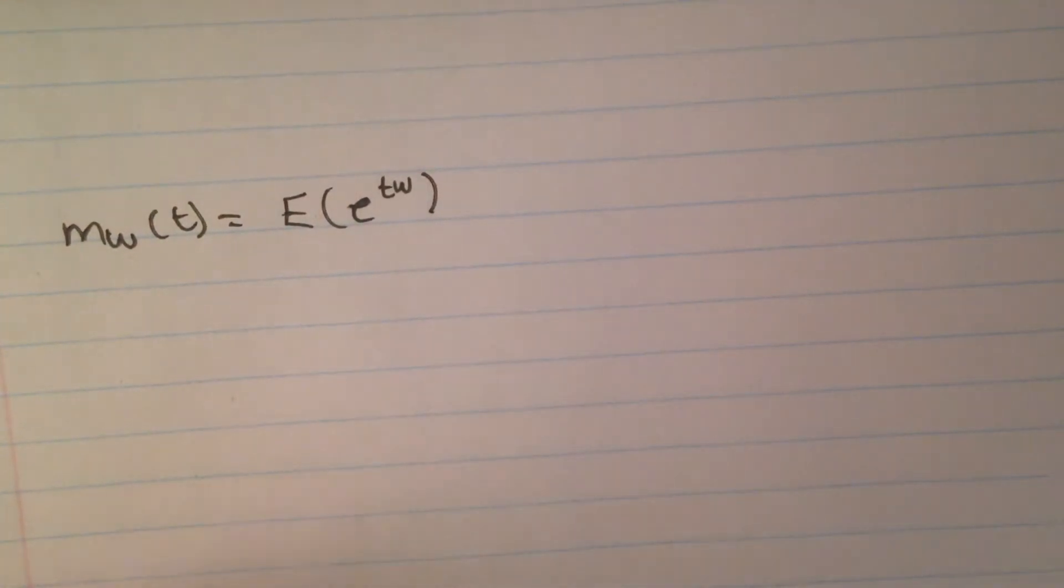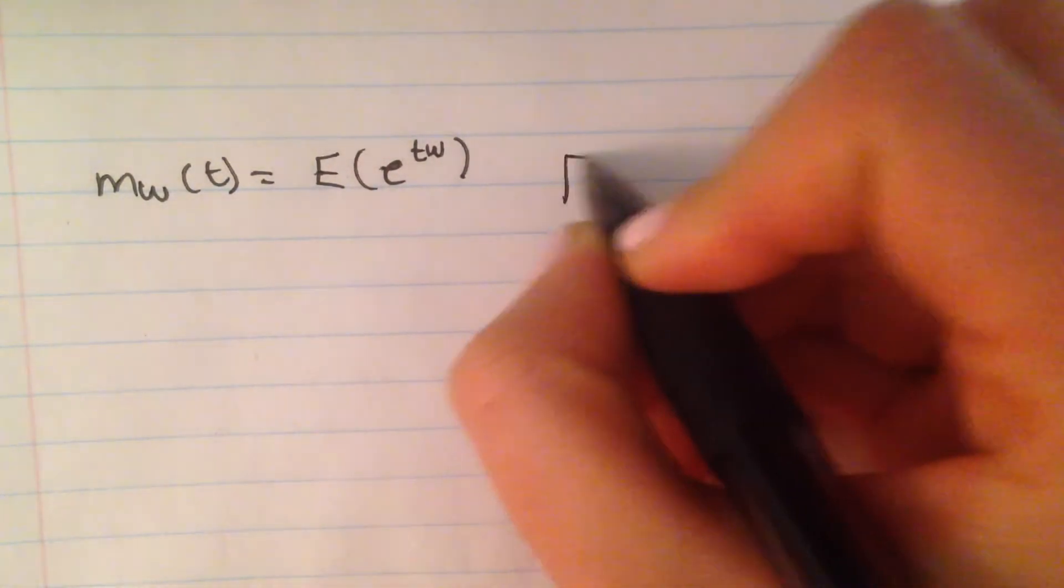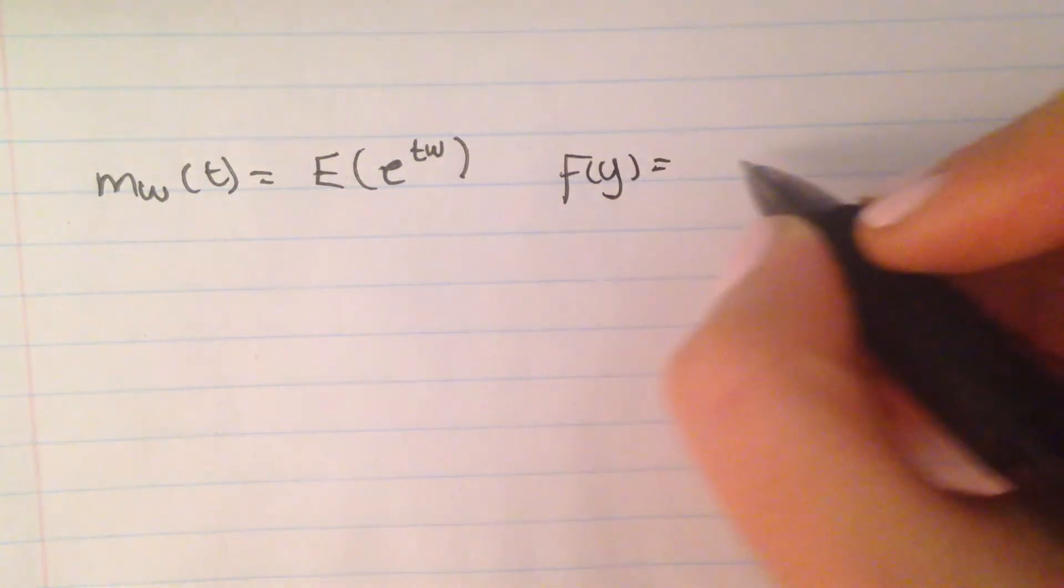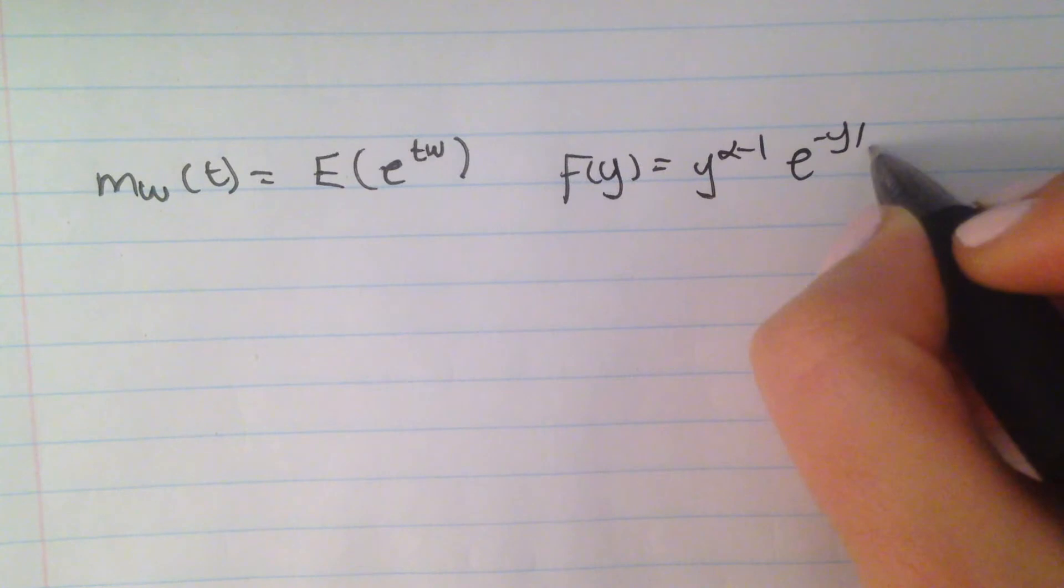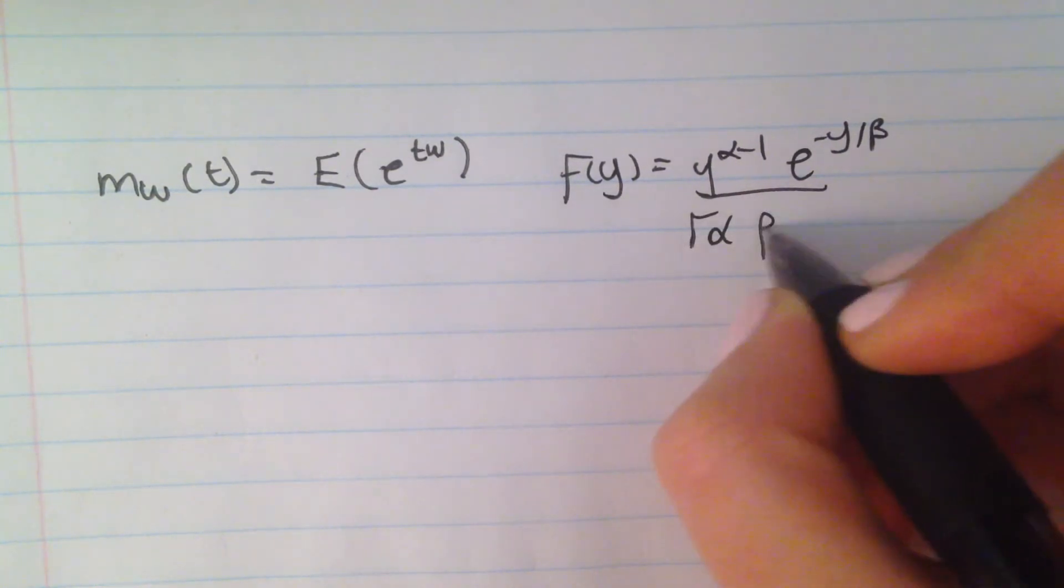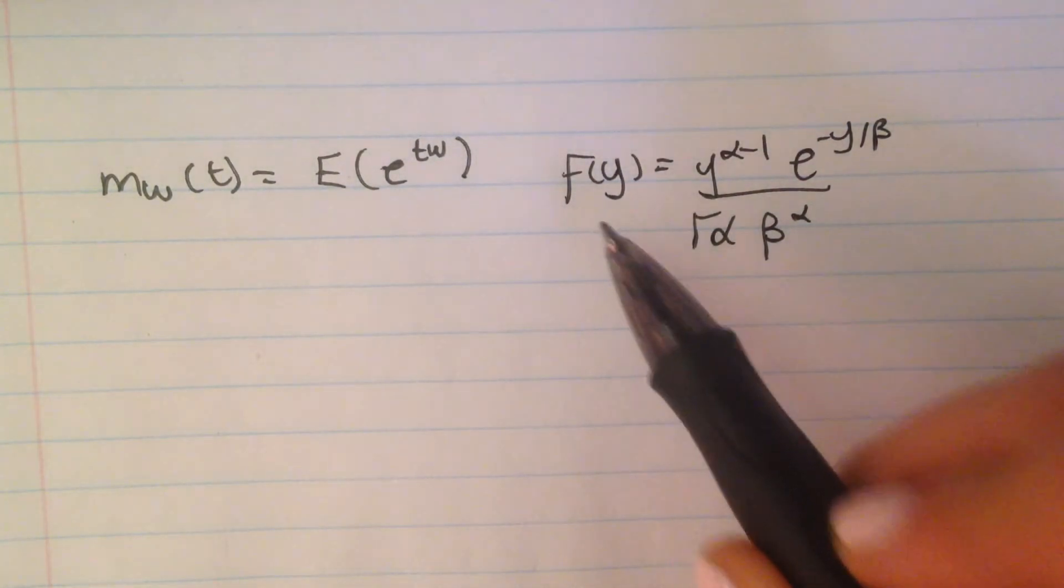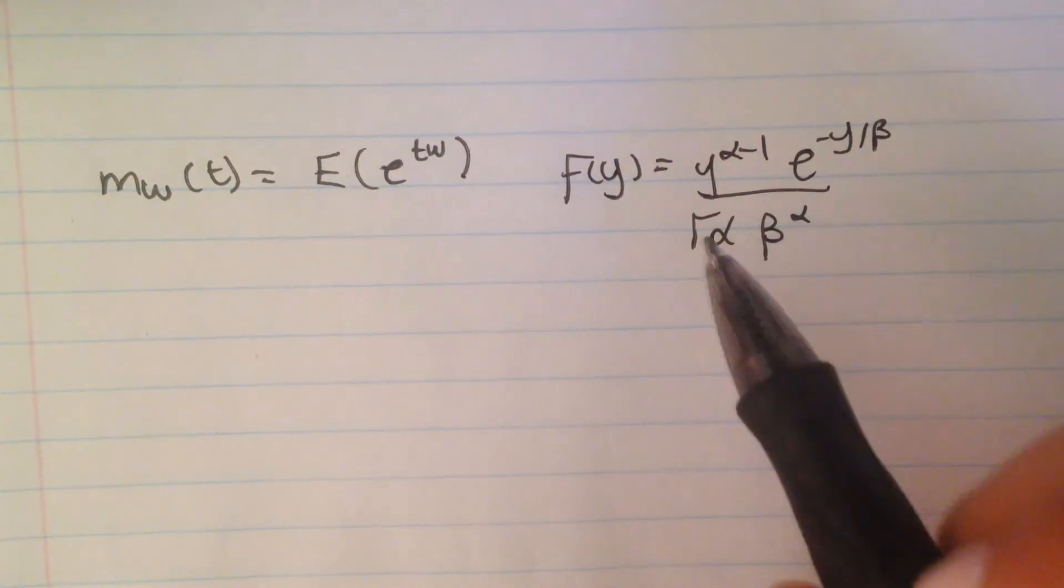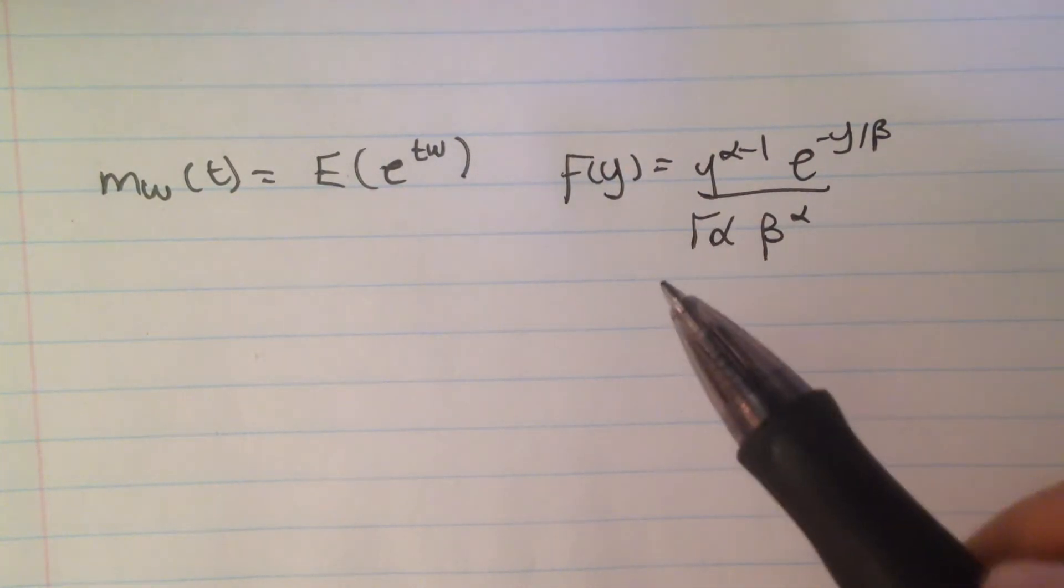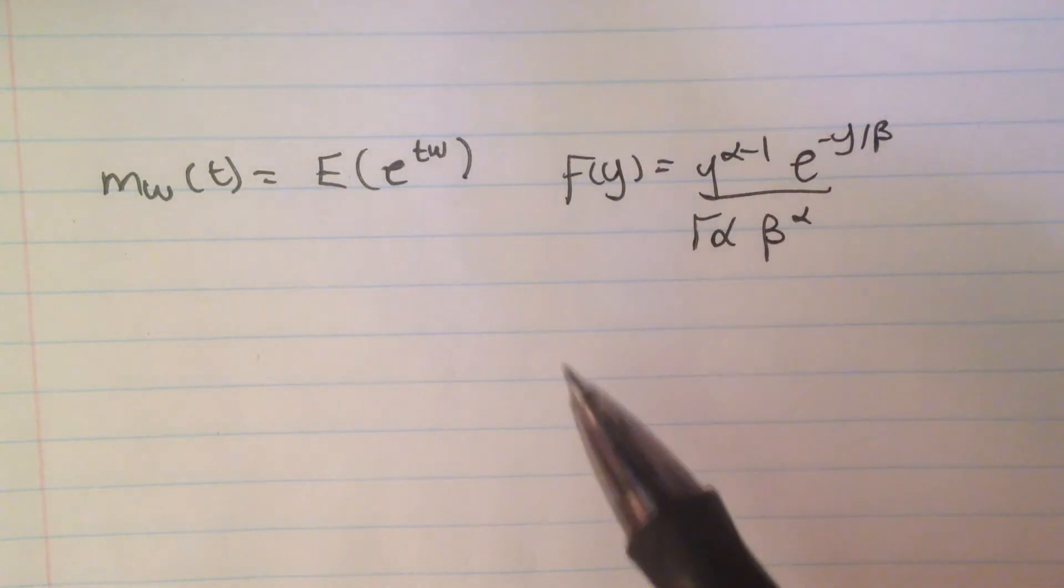We also need to know what's the PDF of the gamma distribution. So this is usually given to you in the back of your book as a table, and you should know them by heart. So the small f means that it's a probability density function, so the important word there is density, probability density function. Make sure you watch for that in the question.